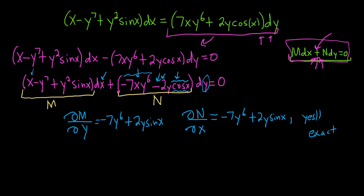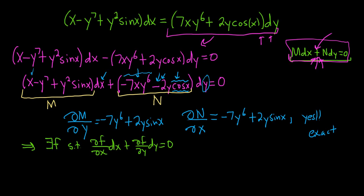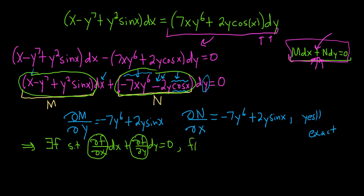Now we can solve it. Before we do, let me explain what it means to be exact. Because it's exact, that means there exists a function f such that del f del x dx plus del f del y dy equals 0. In other words, the piece in front of dx is your del f del x, and the piece in front of dy is your del f del y. The function is of the form f(x, y) equals c, and that's the form of our answer — we'll set our result equal to c at the end.